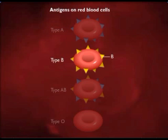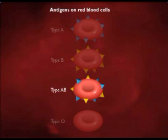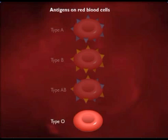Persons who are type AB have both A and B antigens, and those who are type O have neither A nor B antigens.